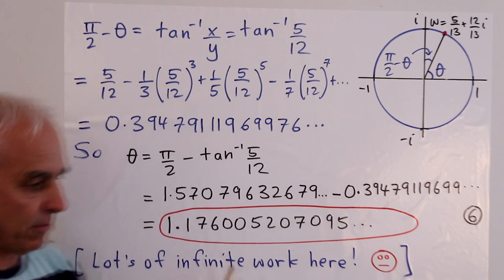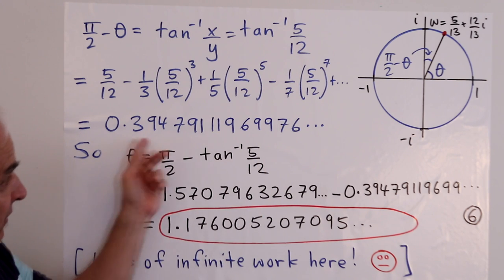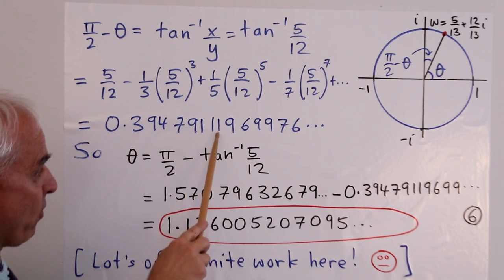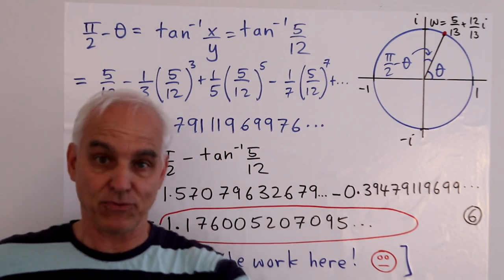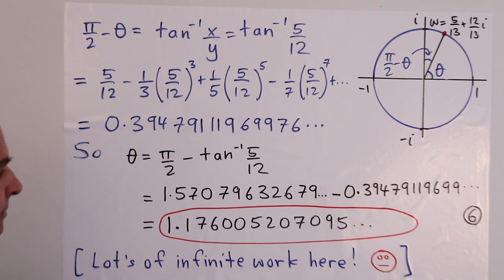So that's what your machine will do if you ask it to evaluate tan⁻¹(5/12). It will give you something like this: 0.3947911969976. And at that point, it will stop. It will not actually exhibit three dots usually.